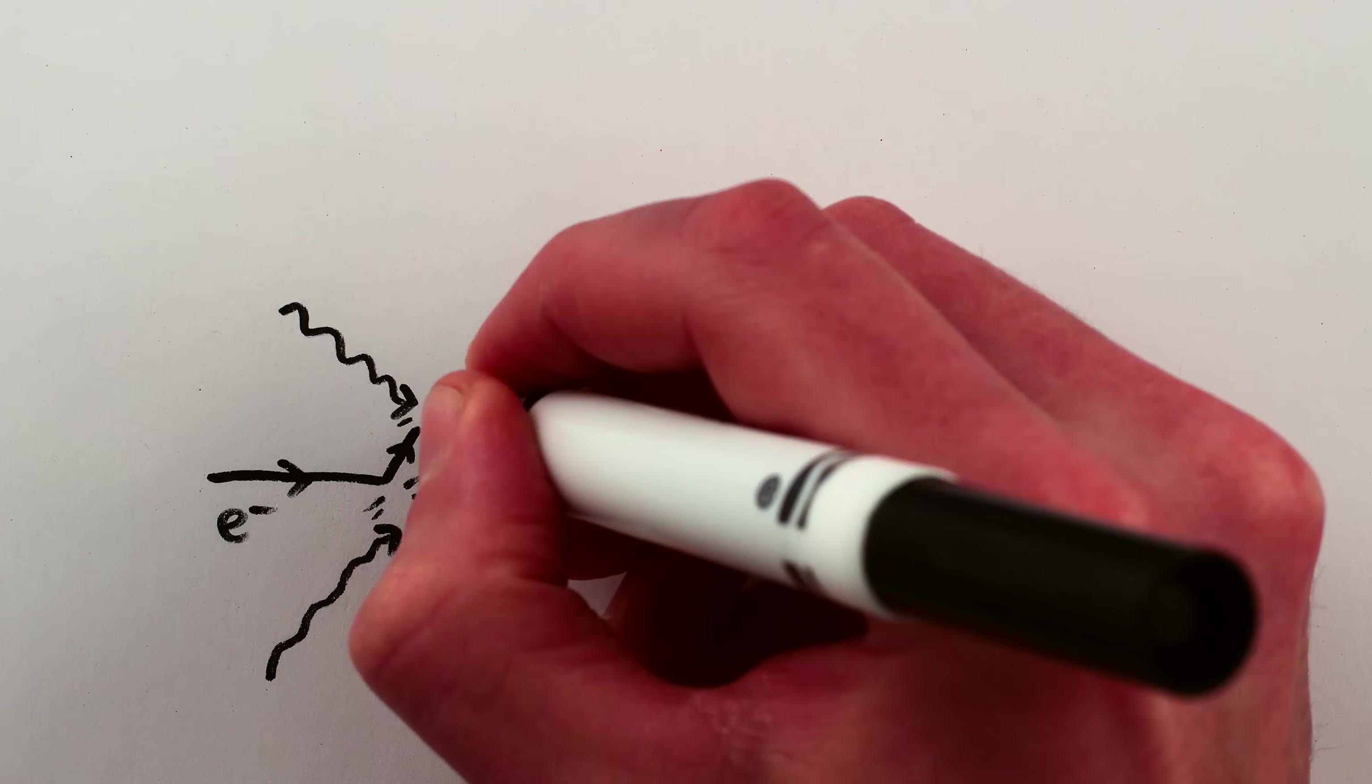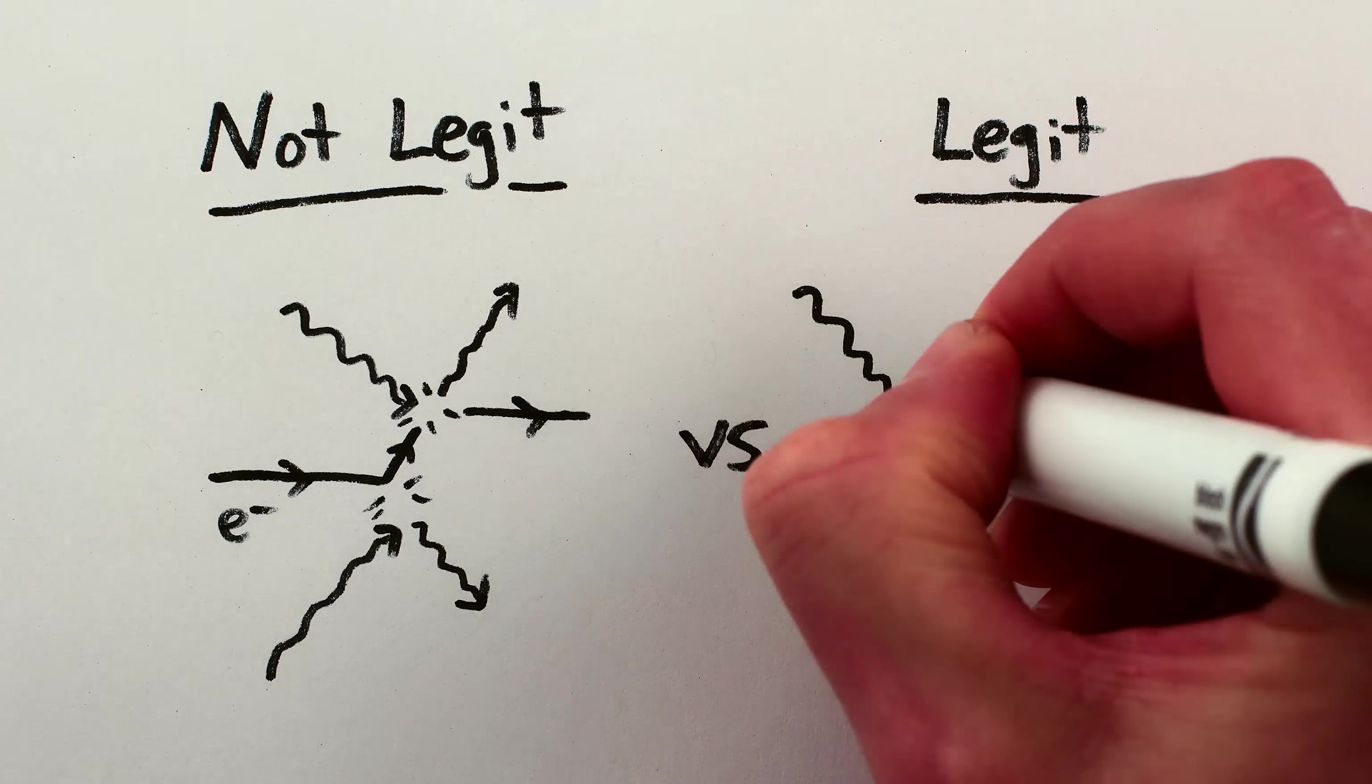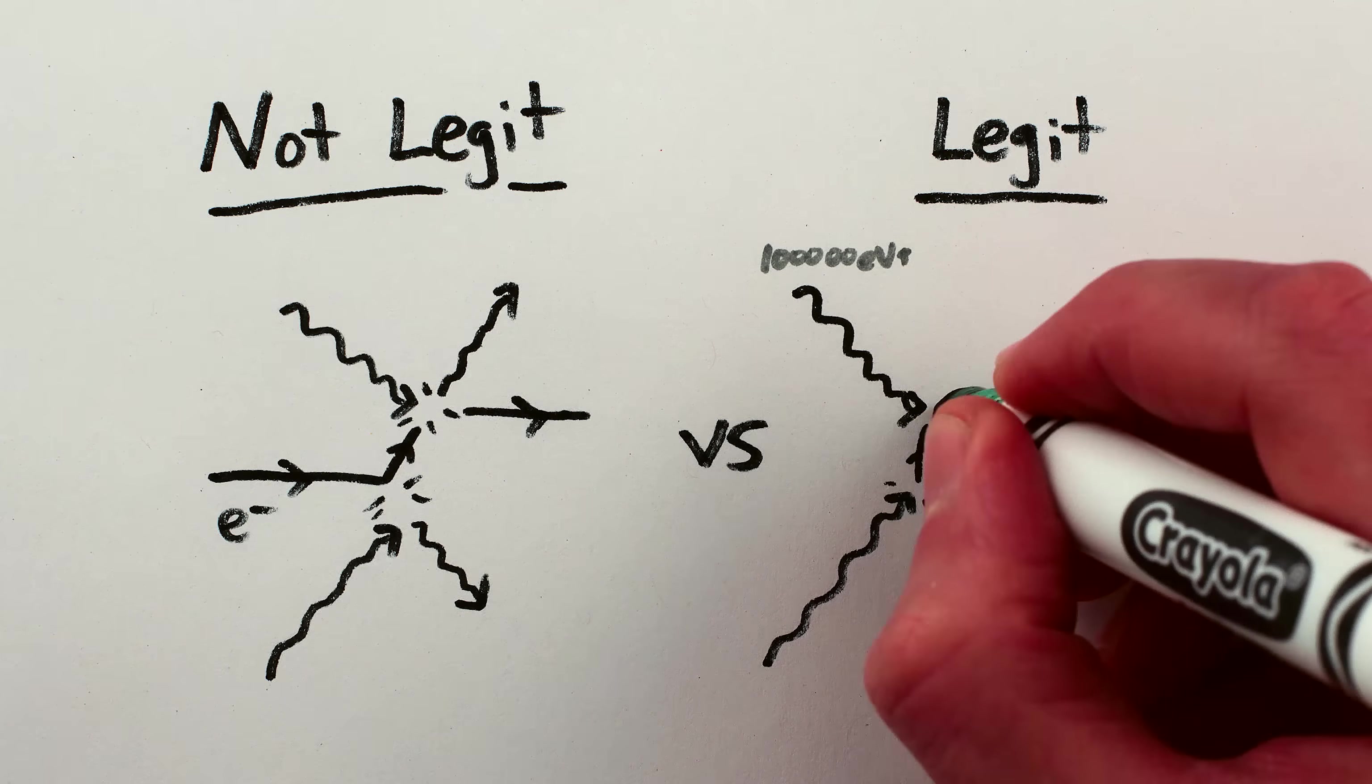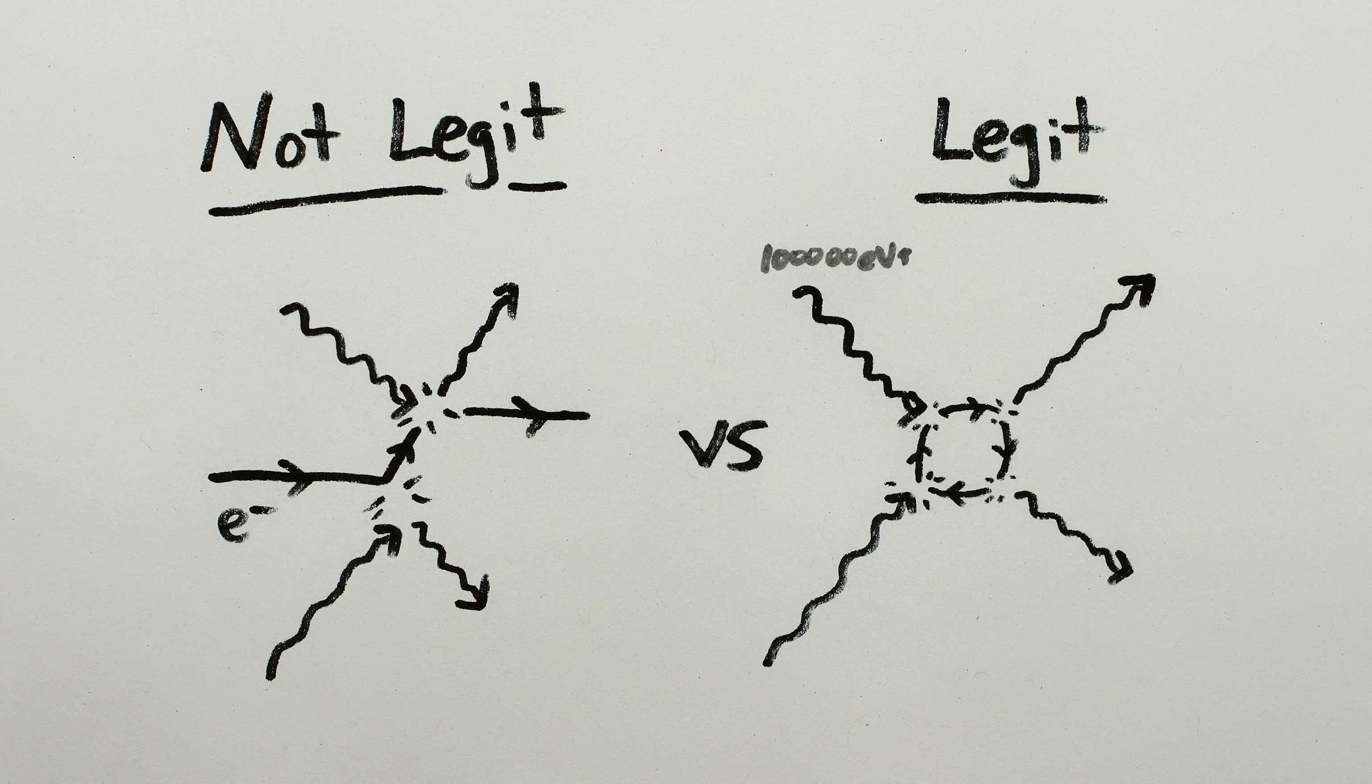I say legit because the key here is that you don't need to luck out and have an electron happen to be passing by. Two solitary, high energy photons can spontaneously generate their own means of crashing into or bouncing off of each other. So, what kind of shadow do we get?